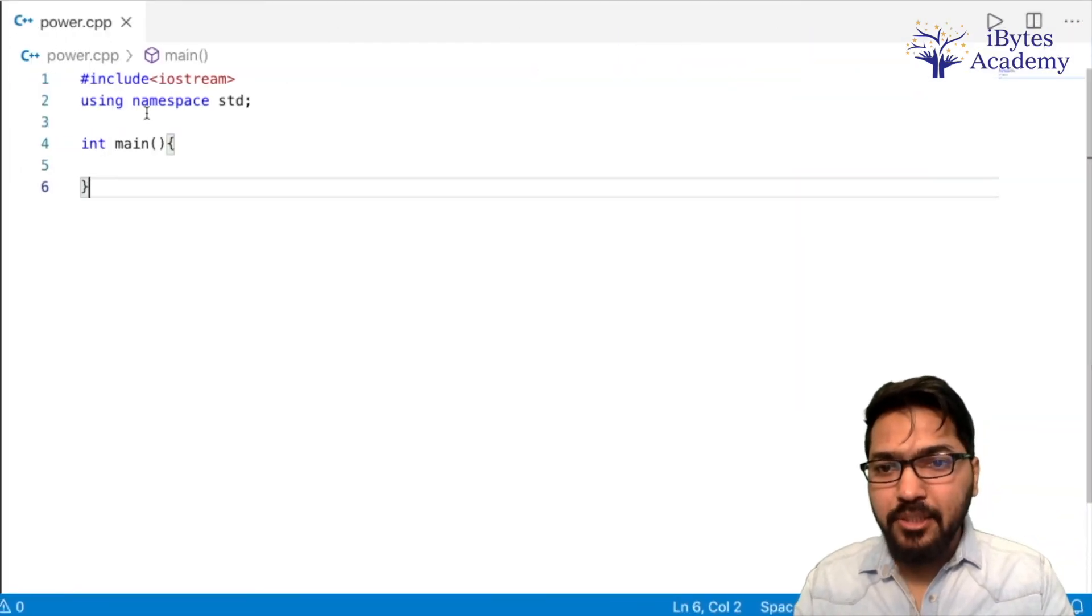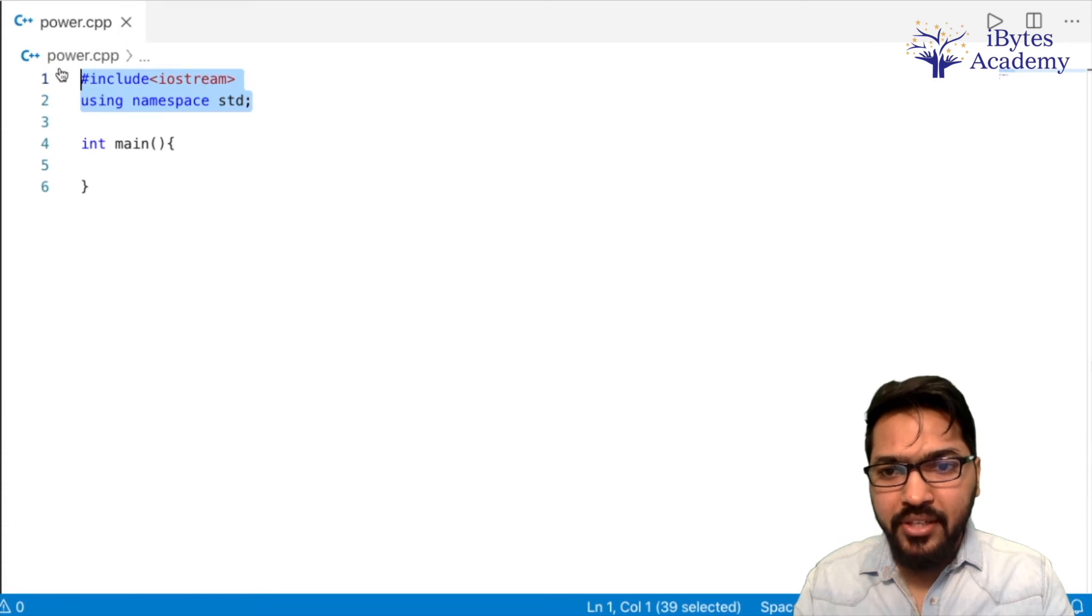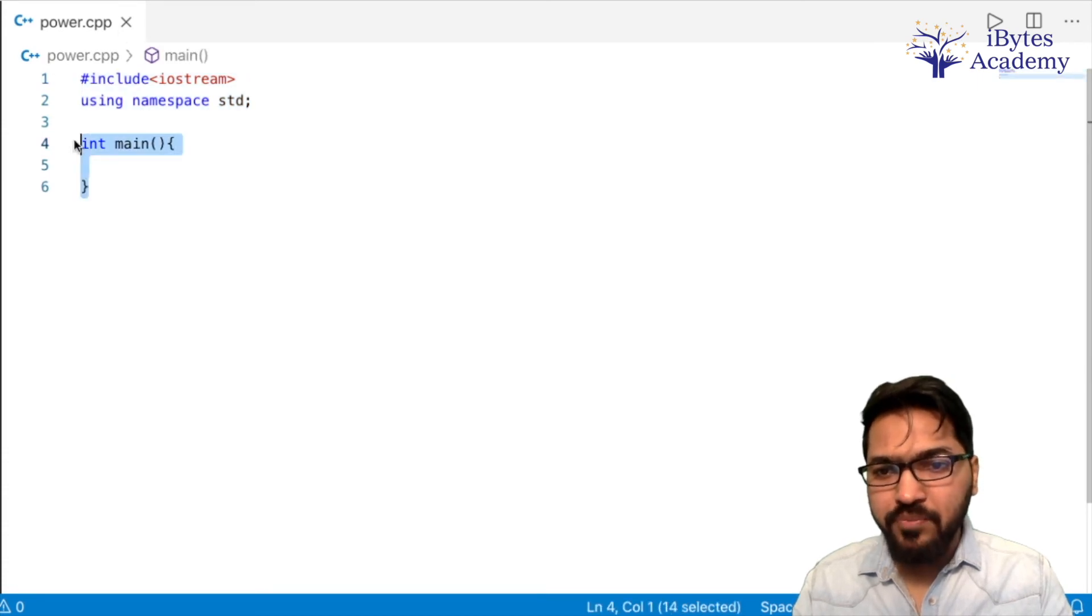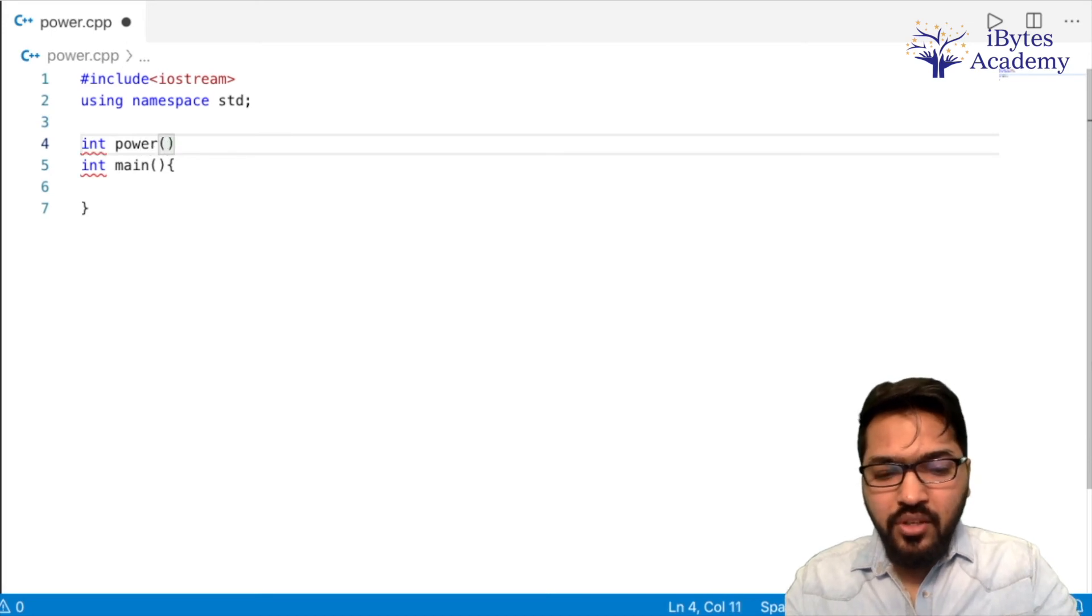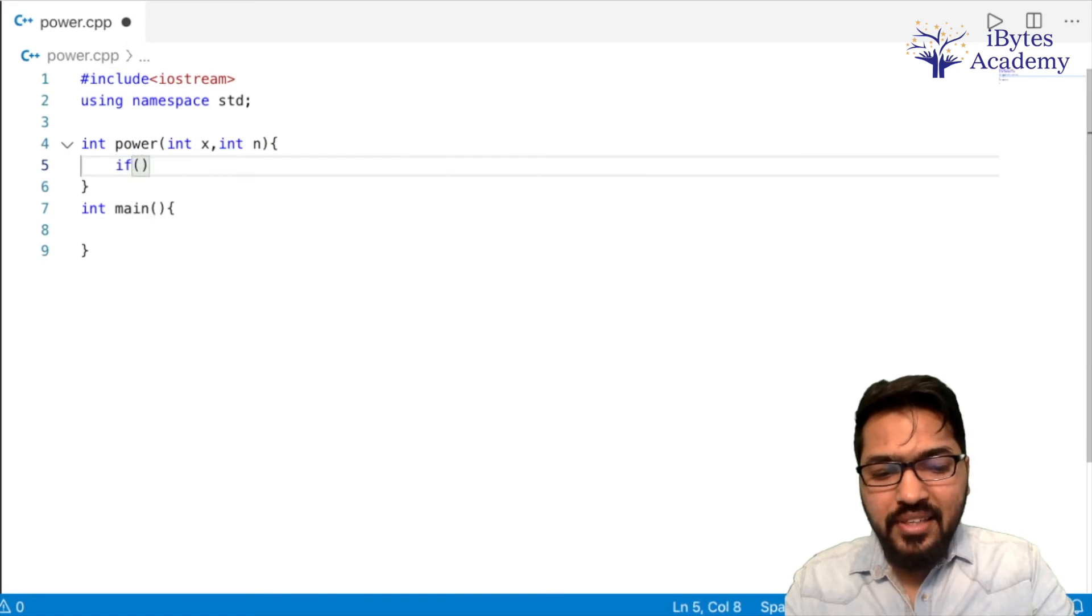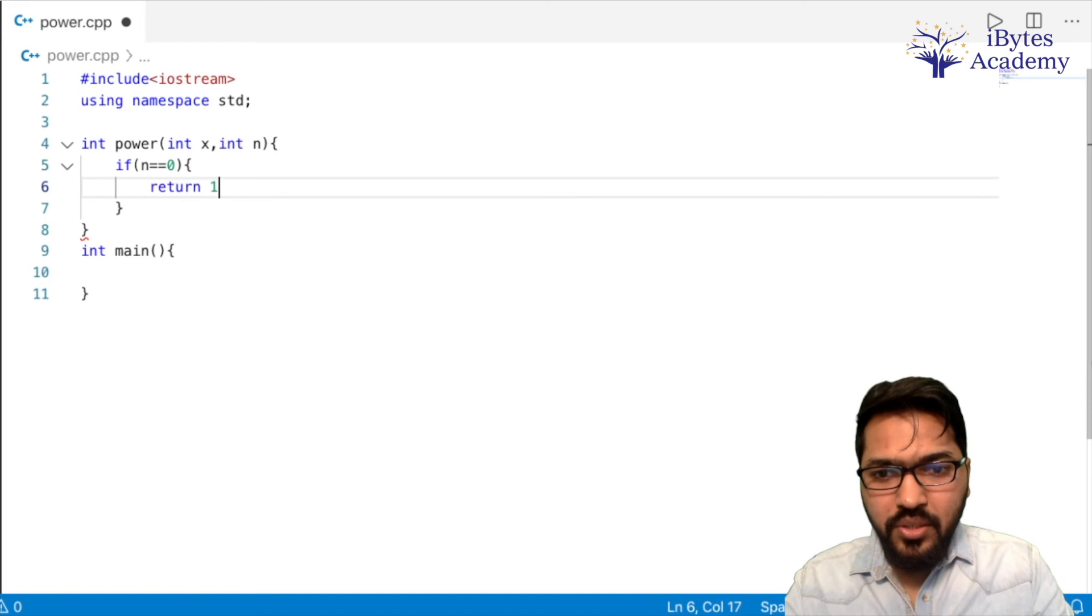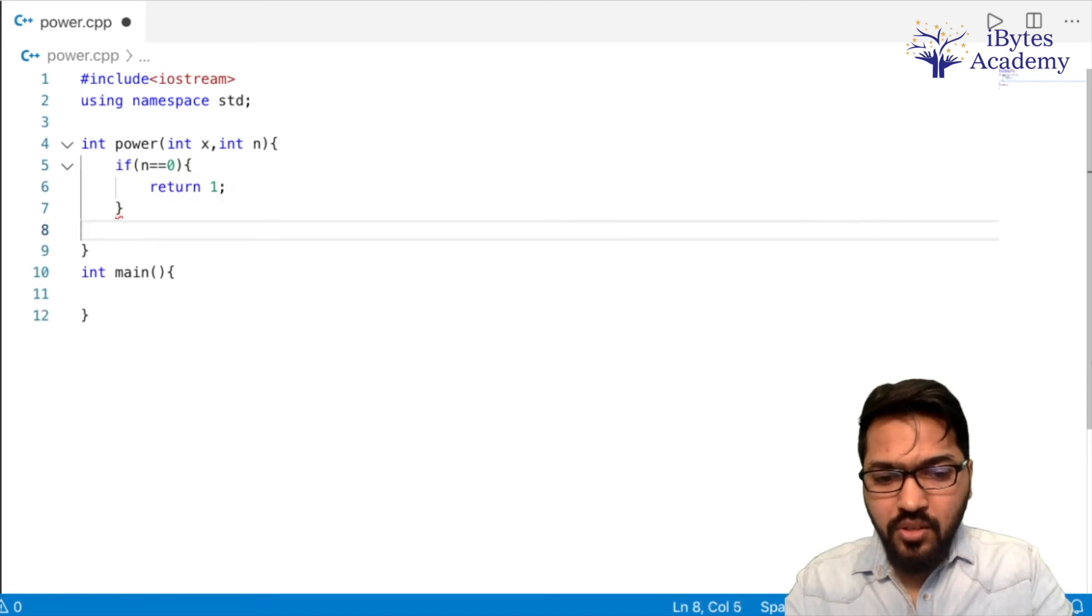So I have already created this cpp file power.cpp. Include iostream using namespace standard int main. This is my main function. So now let's quickly write our power function. Int power. It will get an x and an n. First let's put a boundary case. If n is equal to 0, return 1.